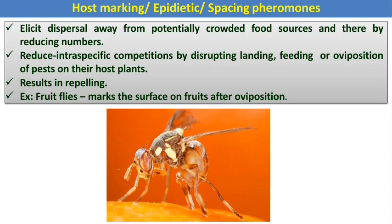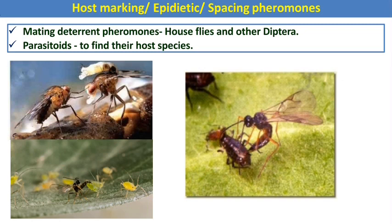Host marking, or epideictic, or spacing pheromones are highly evolved in Diptera and Hymenoptera. For example, fruit flies mark the surface of fruits after oviposition due to host marking pheromones. Parasitoids also use host marking or epideictic pheromones when searching for their host for egg laying.